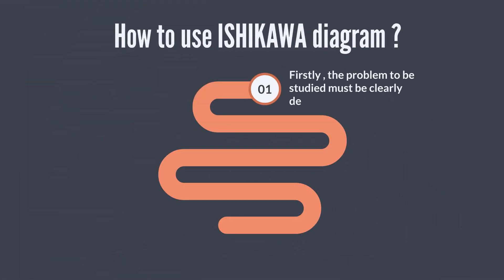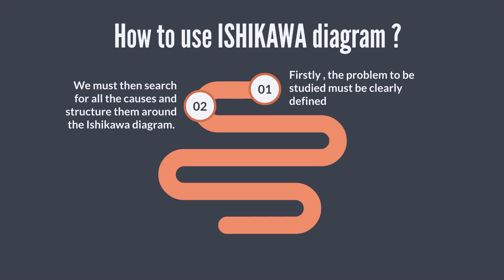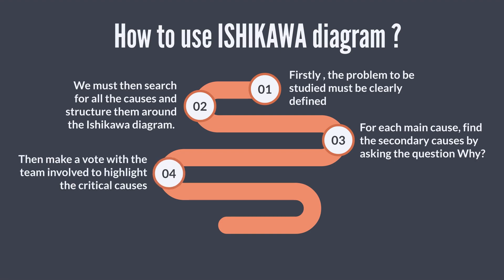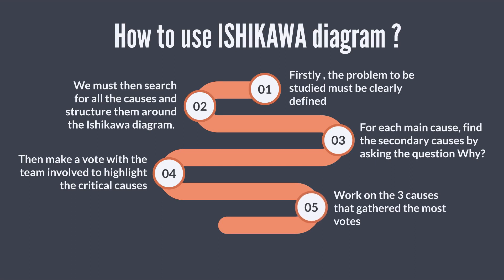Firstly, the problem to be studied must be clearly defined. We must then search for all the causes and structure them around the Ishikawa Diagram. For each main cause, find the secondary causes by asking the question 'why.' Then make a vote with the team involved to highlight the critical causes, and work on the three causes that gathered the most votes. Finally, solve the causes.